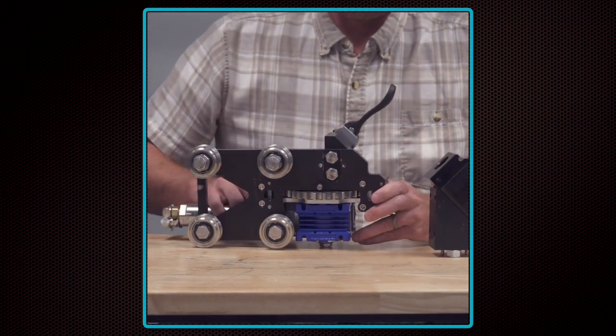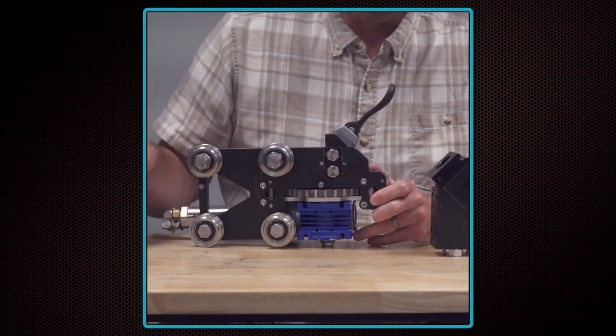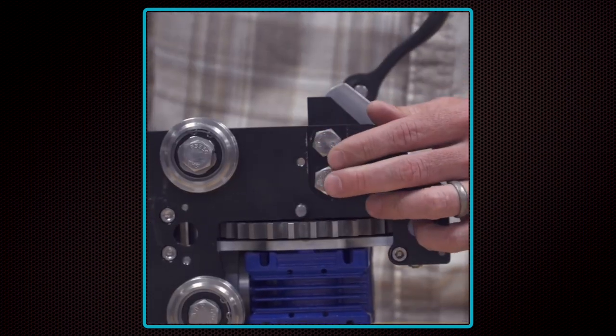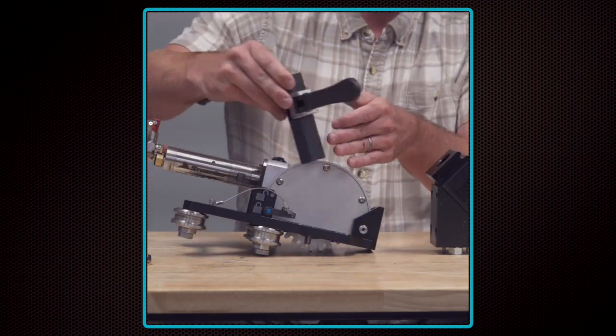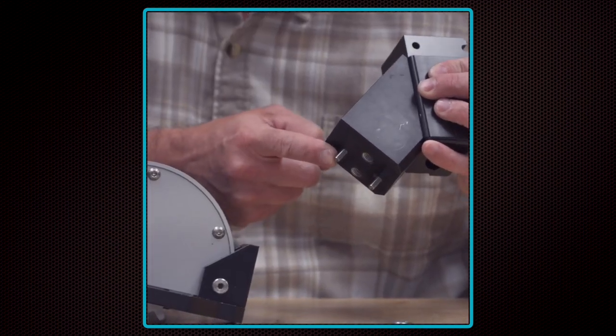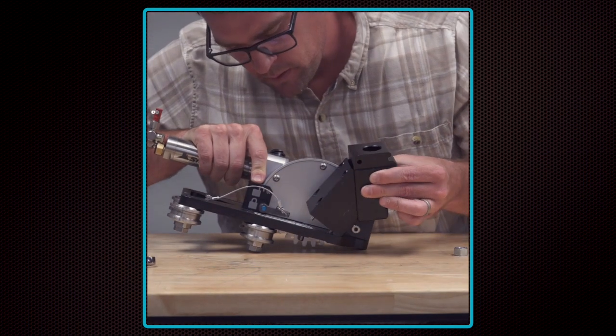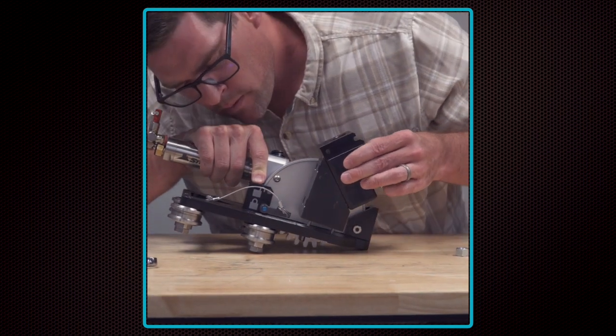Next, loosen the two bolts on the bottom of the carriage and remove the clamp from the linear drive. Now attach the angle block to the linear drive using the same two bolts you removed previously.